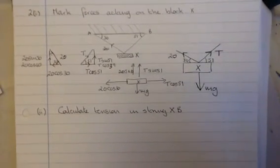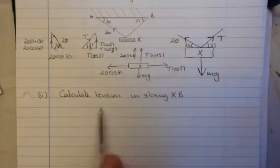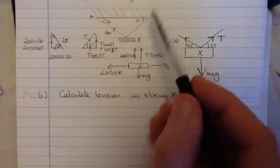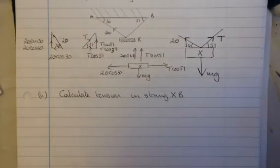Now, that diagram is going to be very useful for the rest of the question. Okay, so we'll move on then. We've got to calculate the tension in the string XB. So, this is T.